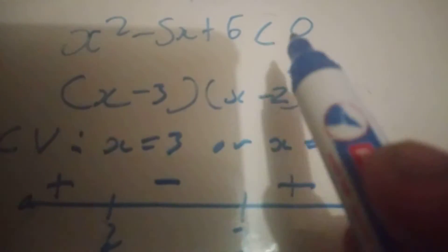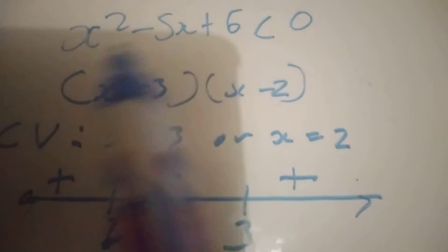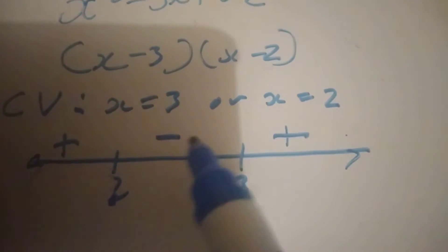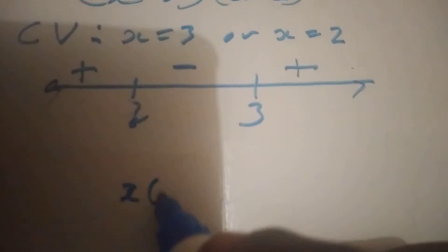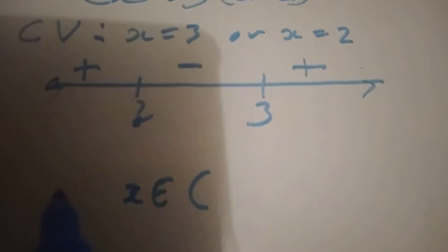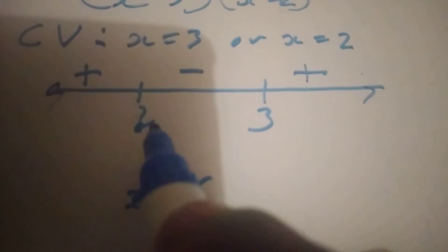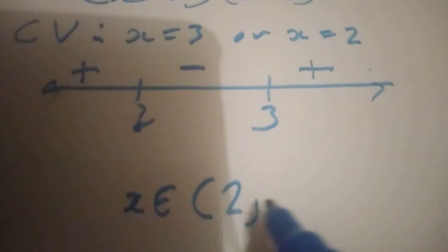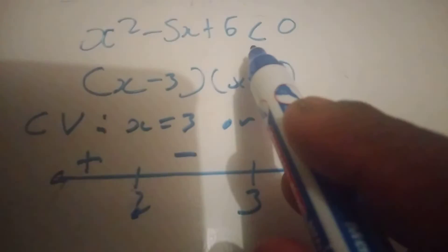So less than 0 means negative — we want it to be negative. Group 2 is the negative group. To describe group 2, we say where it starts and where it ends: x is an element of the interval from 2 until 3. That's group 2 — it starts from 2 until 3. I'm putting curve brackets because the question said less than only. If it said less than or equals to, I would put square brackets.